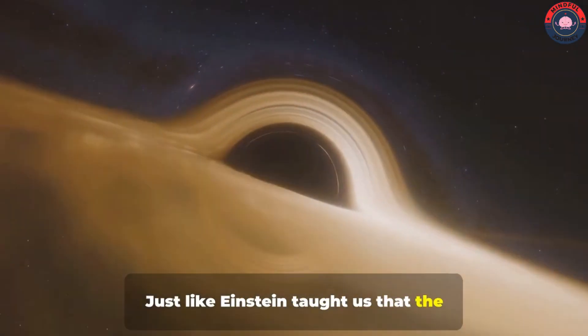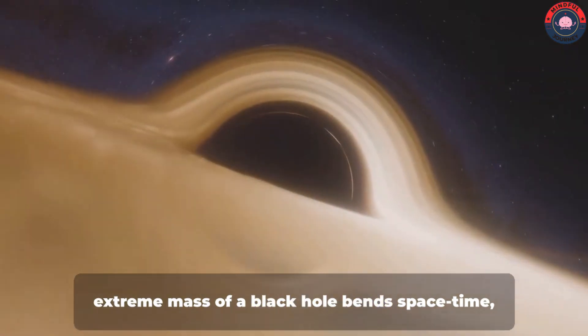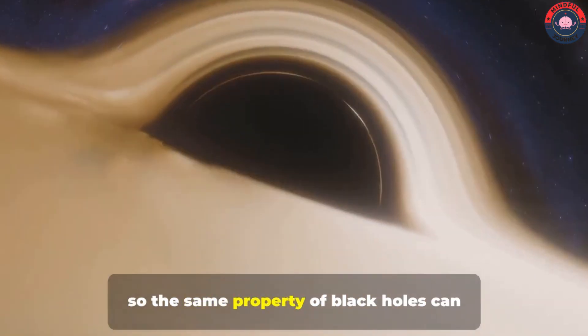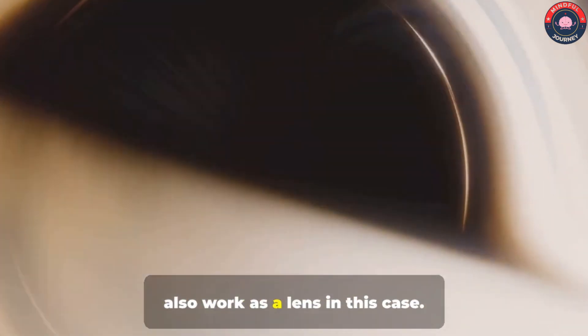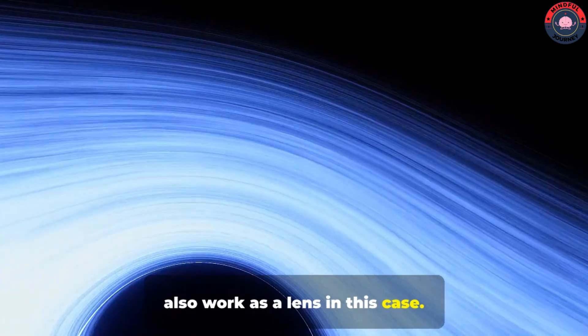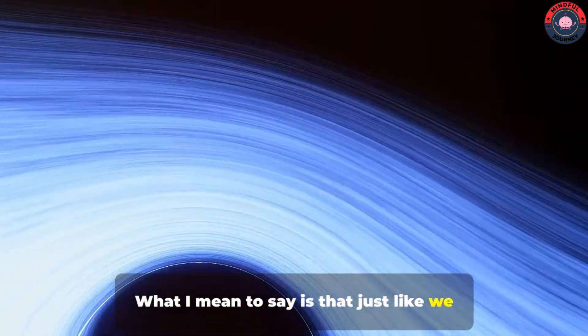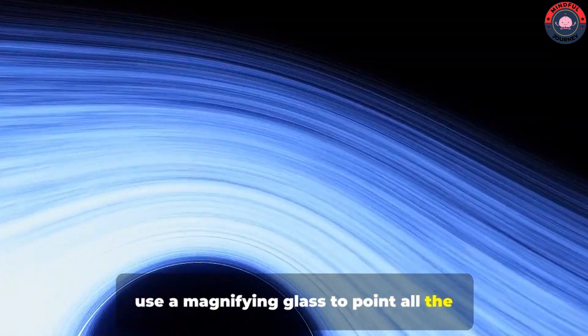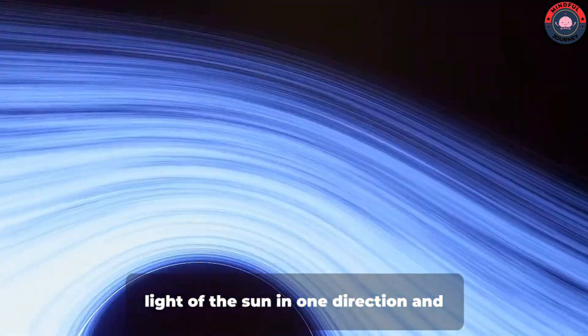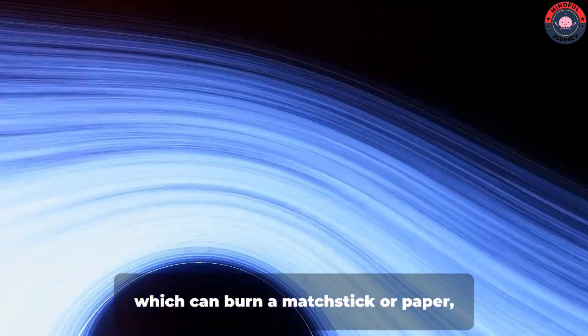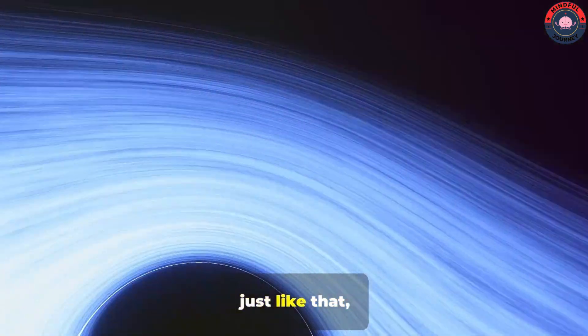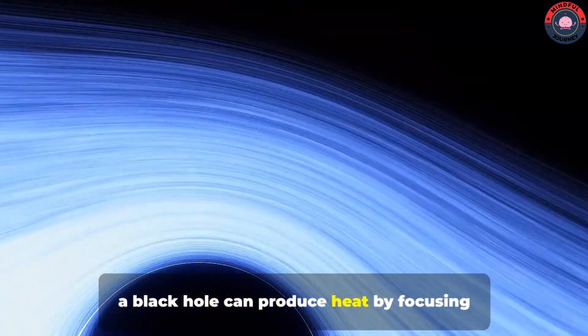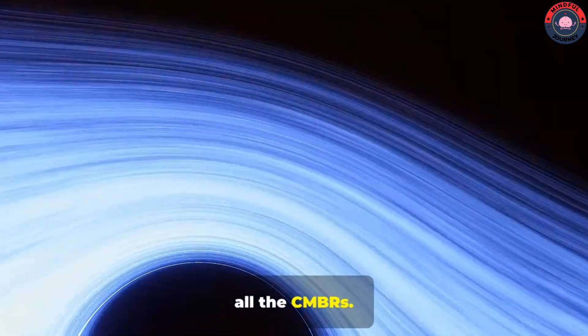Just like Einstein taught us that the extreme mass of a black hole bends space-time, so the same property of black holes can also work as a lens in this case. What I mean to say is that just like we use a magnifying glass to point all the light of the sun in one direction and produce heat, which can burn a matchstick or paper, just like that, a black hole can produce heat by focusing all the CMBRs.